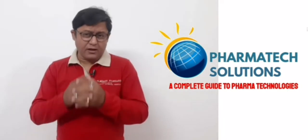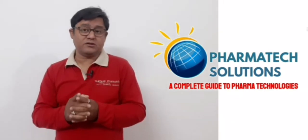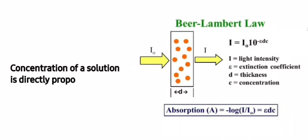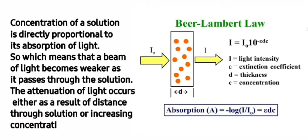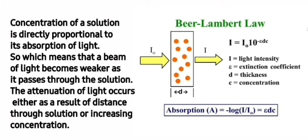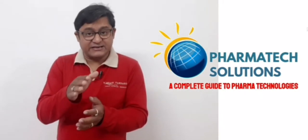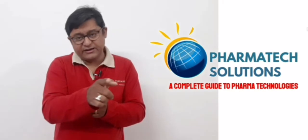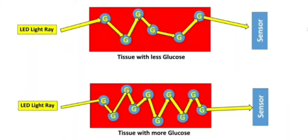Here, Beer-Lambert Law plays a very vital role in the absorption measurement, which states that the concentration of any solution is directly proportional to its absorption of light. So the premise is that a beam of light becomes weaker as it passes through the solution. The attenuation of light occurs either as a result of the distance through the solution or the increasing concentration the light has to travel.